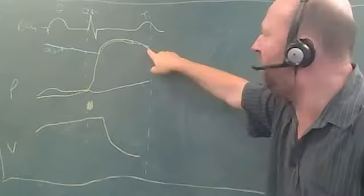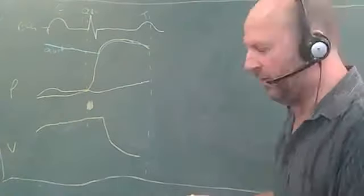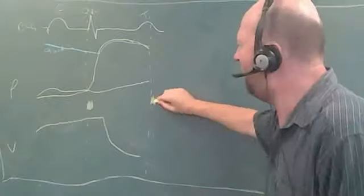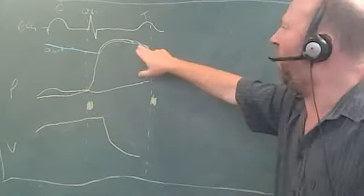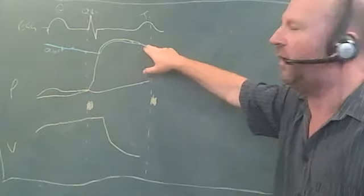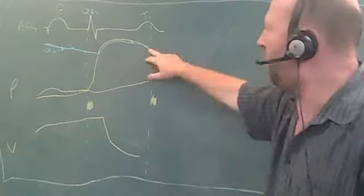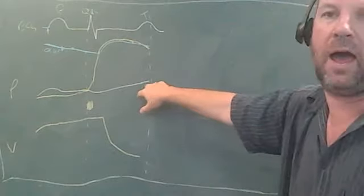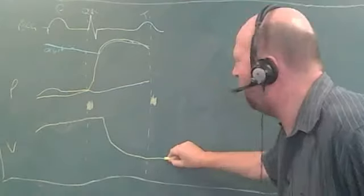Once ventricular pressure is less than aortic pressure, the aortic valve shuts — and when the aortic valve shuts, we hear heart sound two. At this stage, with the ventricle relaxing, the semilunar valves are shut and ventricular pressure is still greater than atrial pressure, so the mitral and tricuspid valves are also still shut. With both valves shut, no blood is going anywhere — this is the period of isovolumetric relaxation.